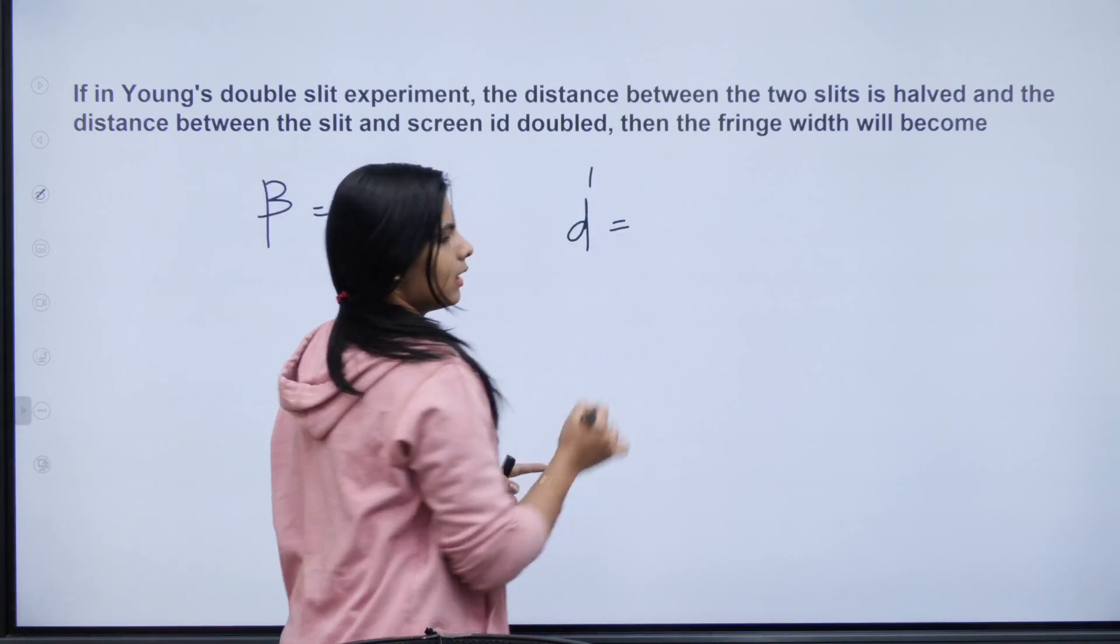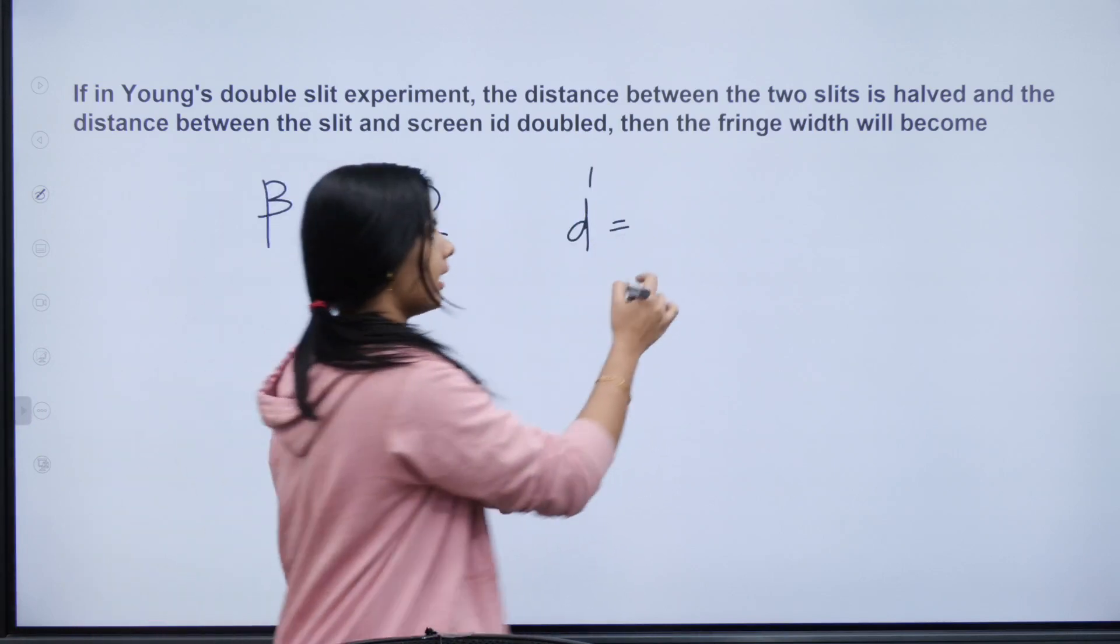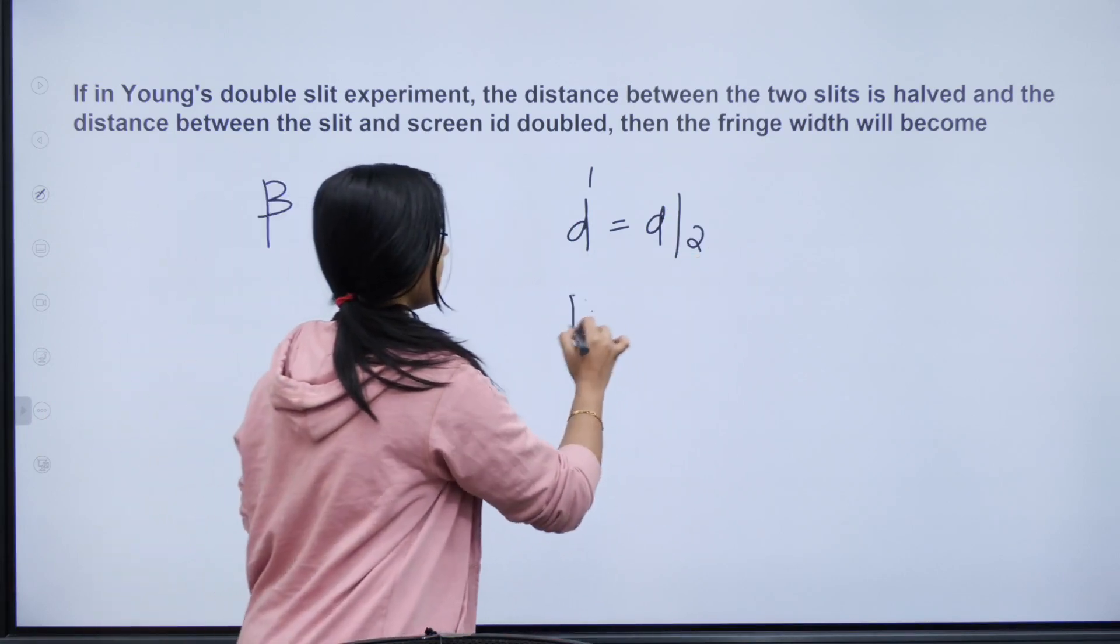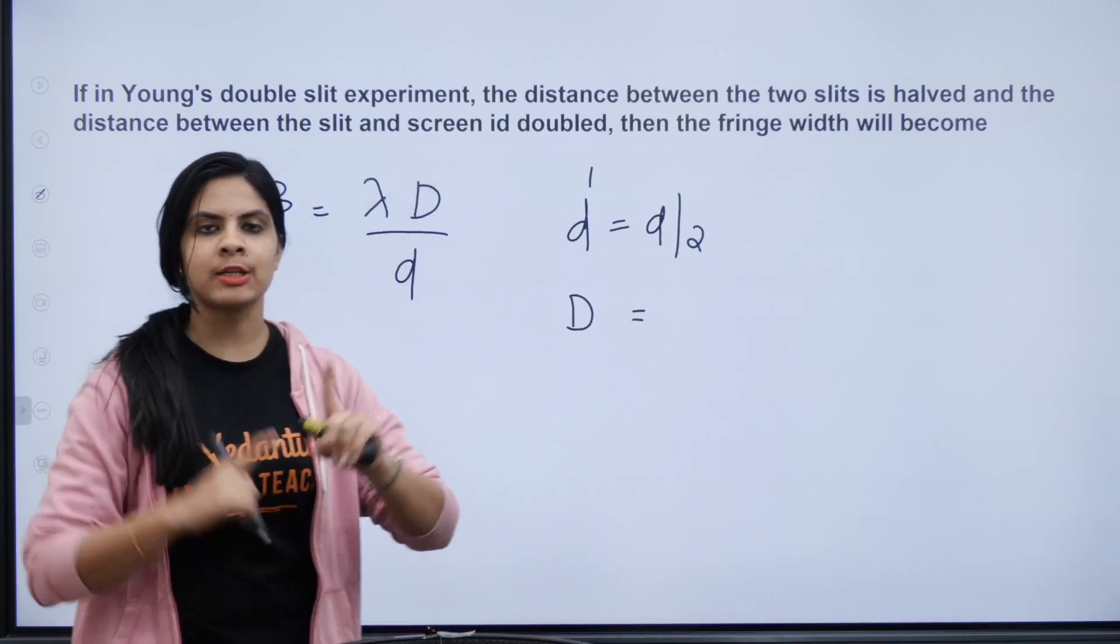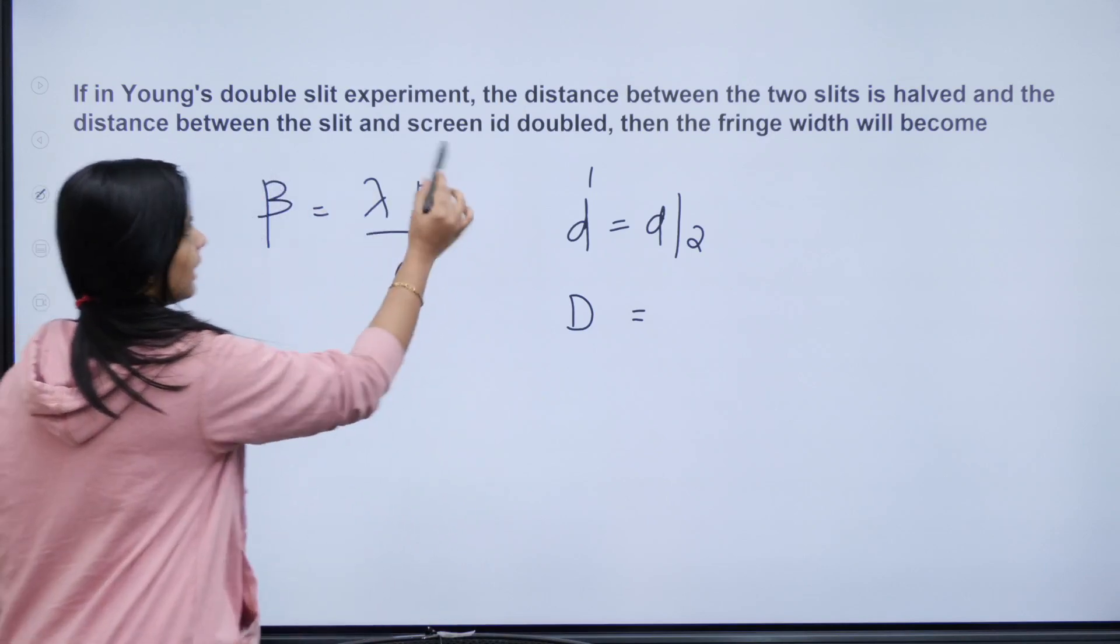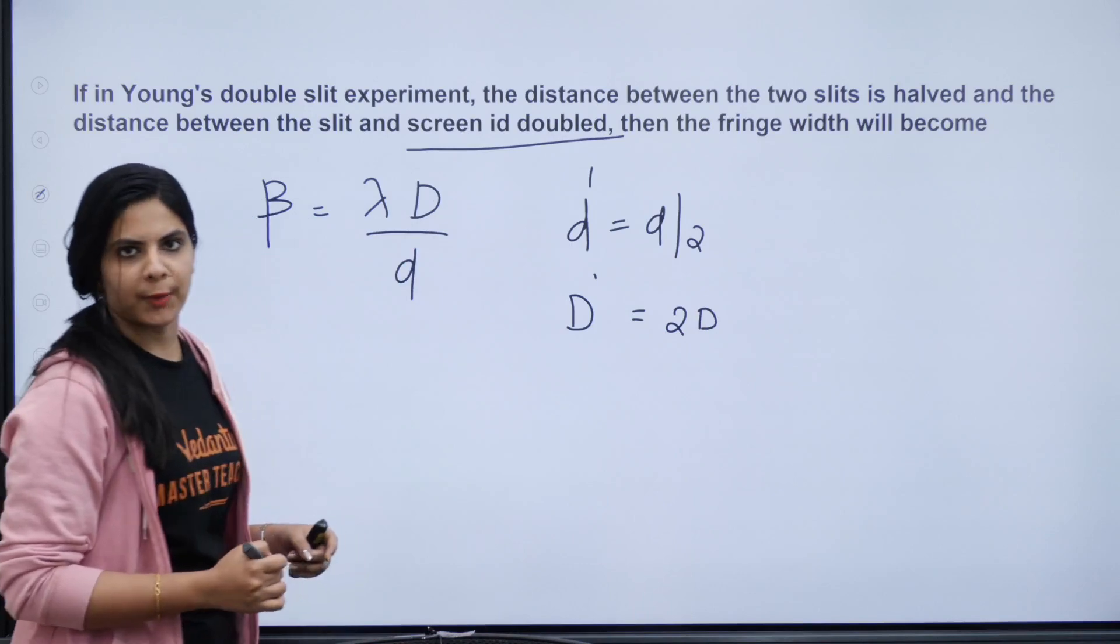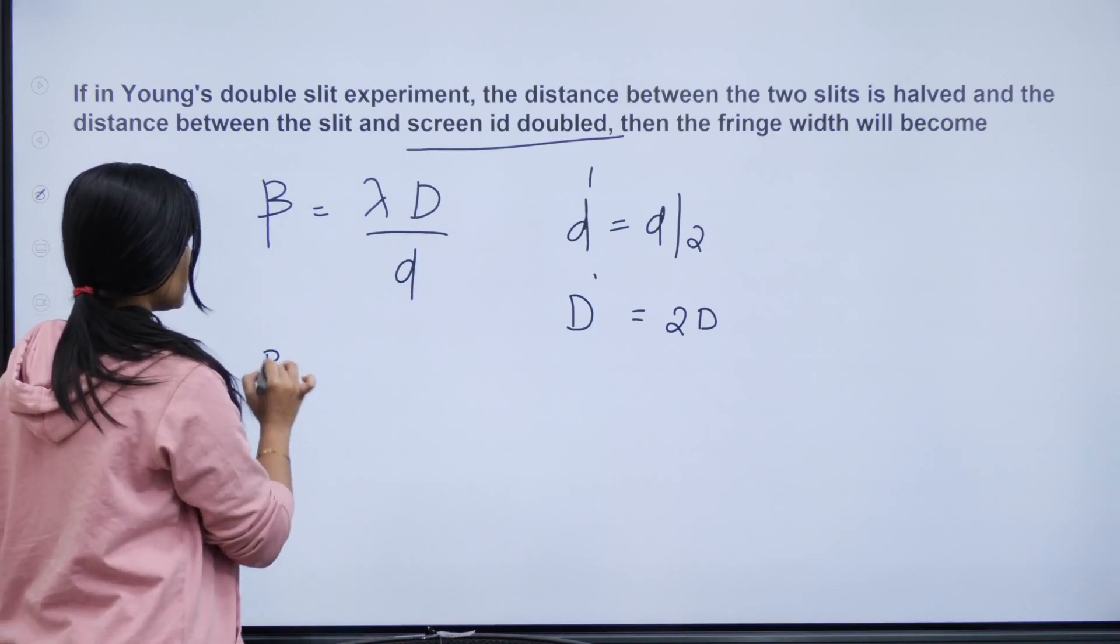So the slit separation is halved, that is d by 2. Then next, capital D is the slit and screen distance, that is doubled. So d dash equals 2D. Now what we get is beta dash equals lambda times 2D divided by d by 2.